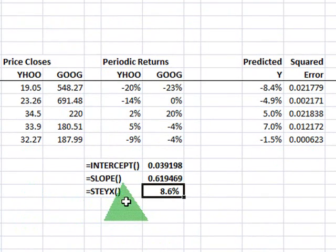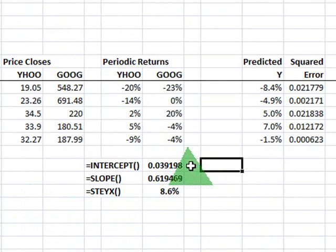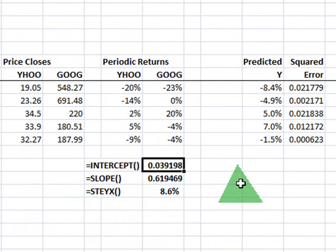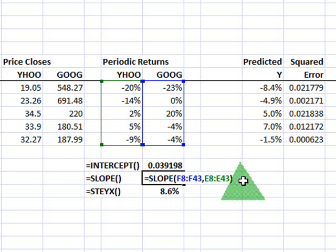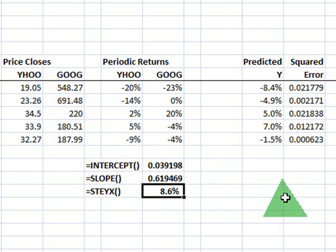So if I go back to the data, what I added down here at the bottom first is the Excel's intercept calculation. So that takes two ranges. First, the Google, the Y series, which is Google, comma, the X series, which is Yahoo. So that gives me the intercept. Then I calculated the slope, which again takes two series. First, the Y series and then comma, the X series. So that gives me the slope automatically.